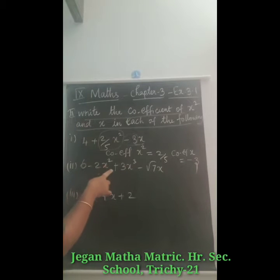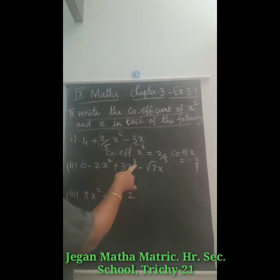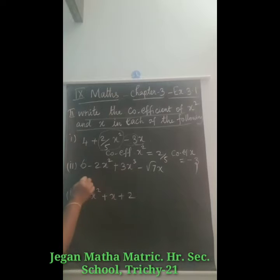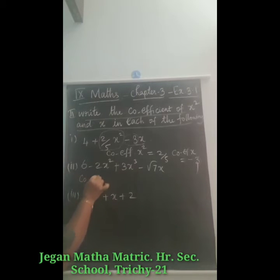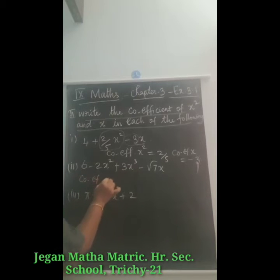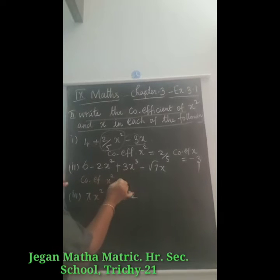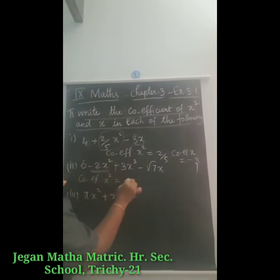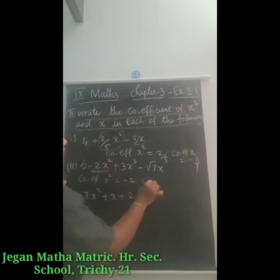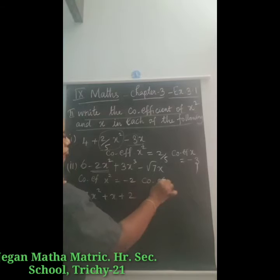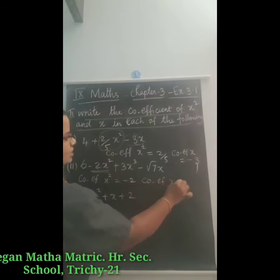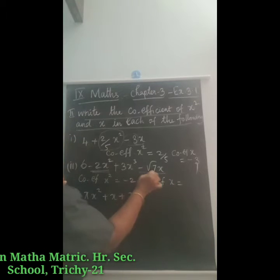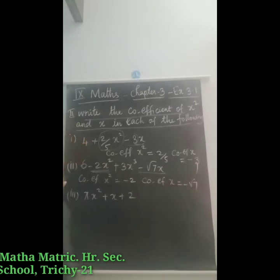Next one: 6 minus 2x squared plus 3x cubed minus root 7x. The coefficient of x squared is minus 2. The coefficient of x is minus root 7.